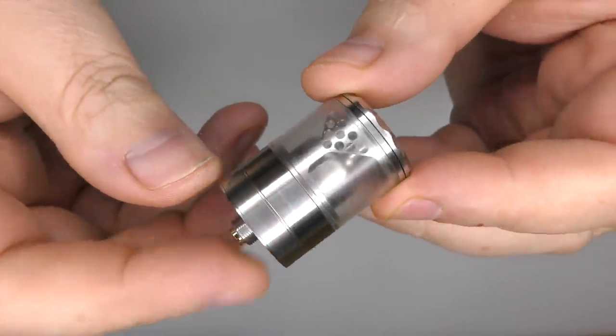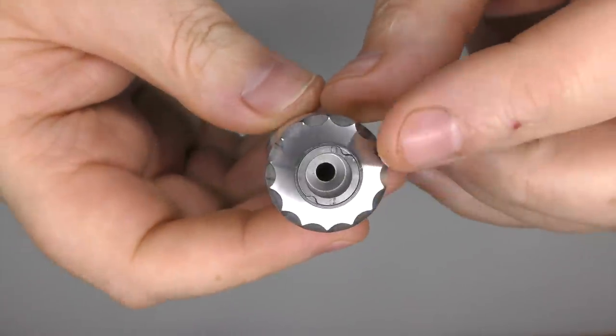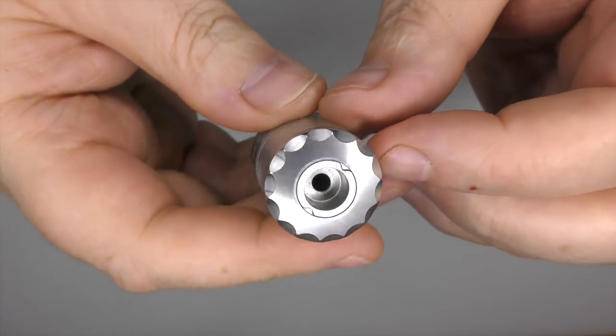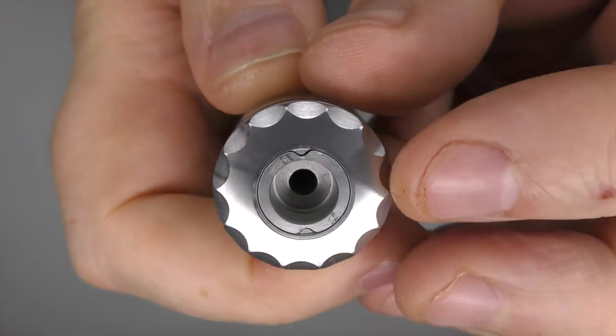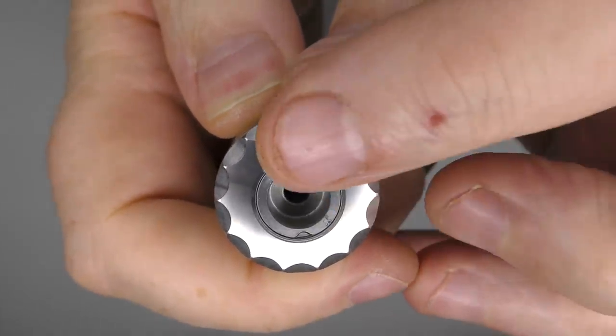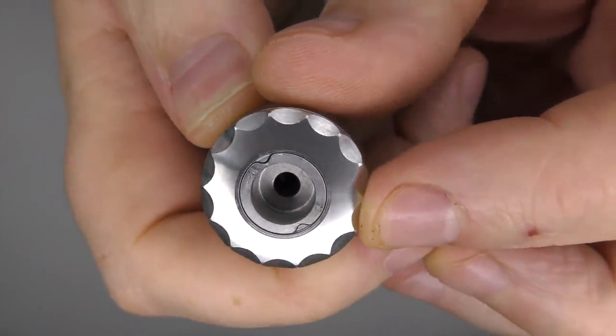So once again, you're looking at 316 stainless steel for everything you see here, pretty much. We've got a top fill that goes on here, and right now, I will point out that it's one of my niggles. And see the marks right there and there.